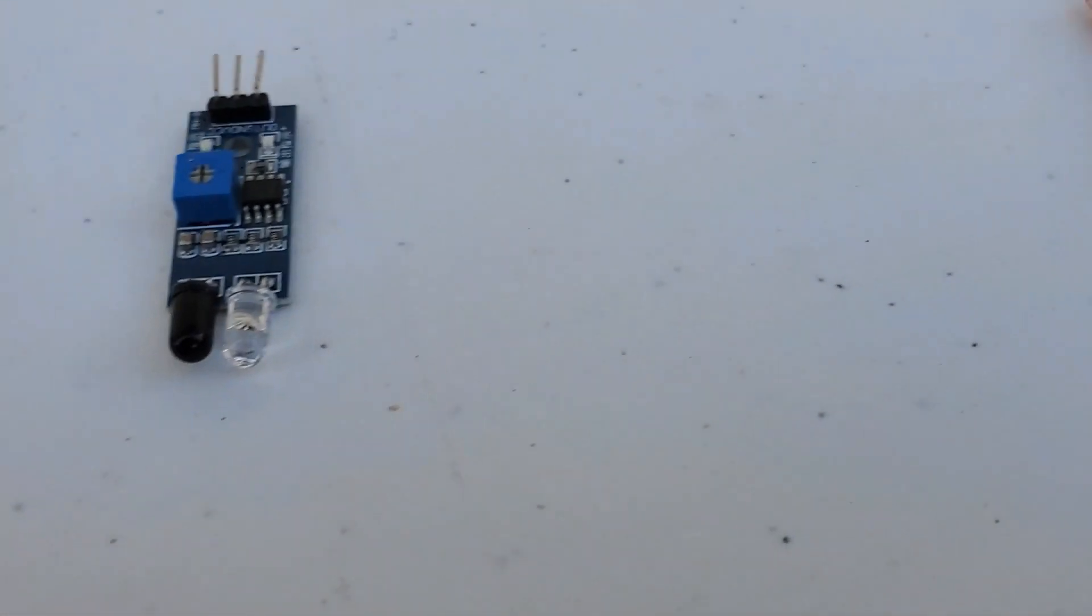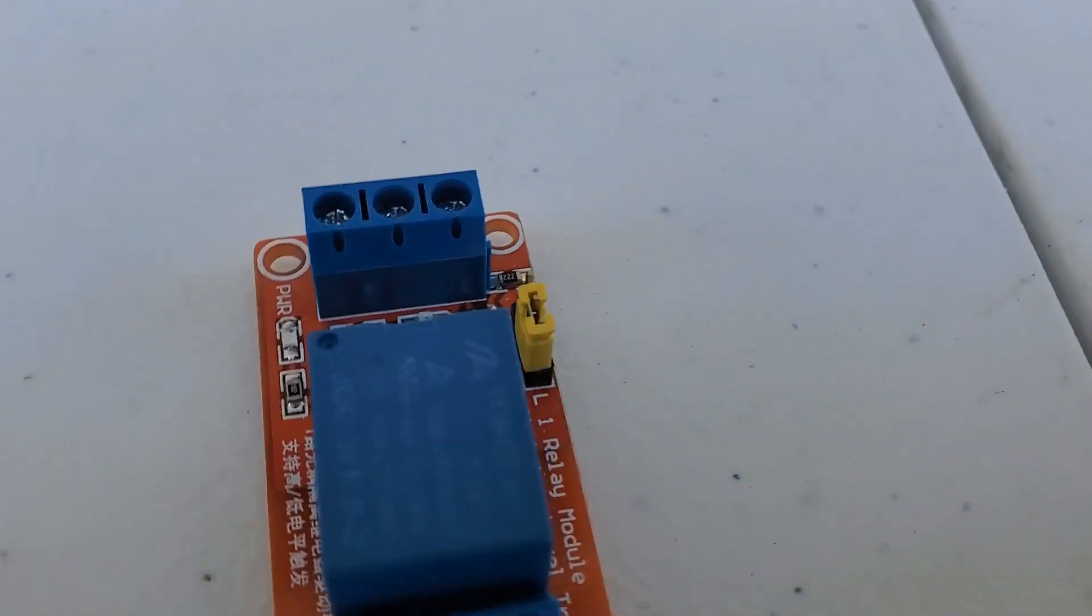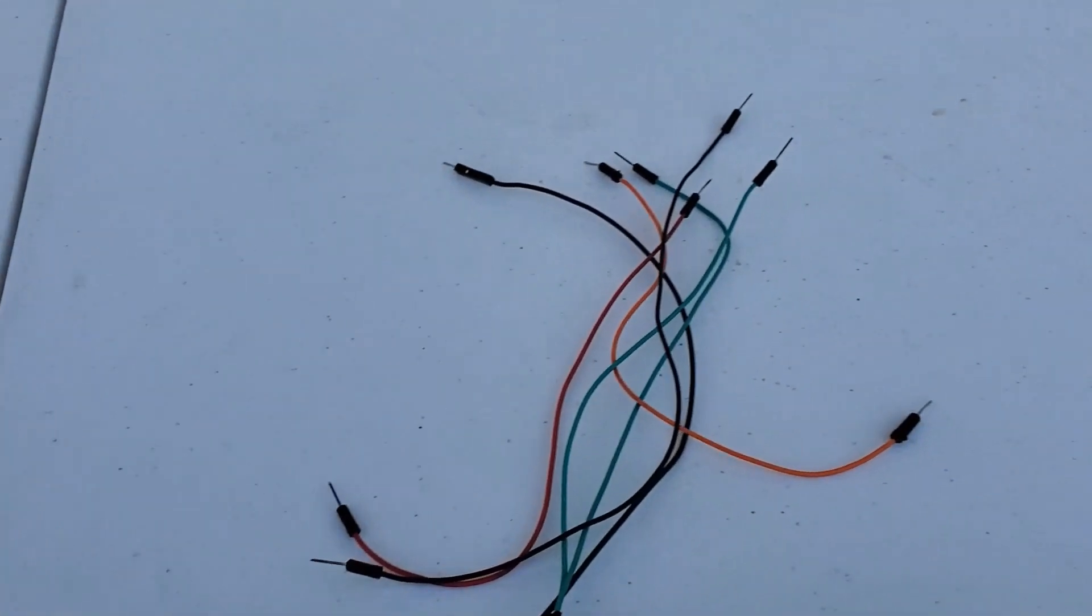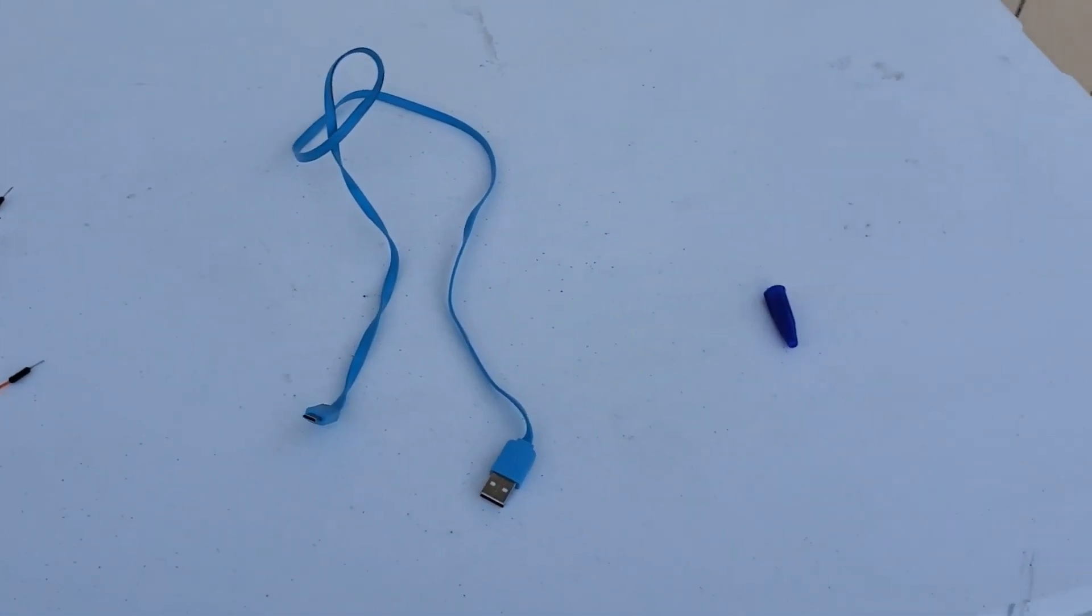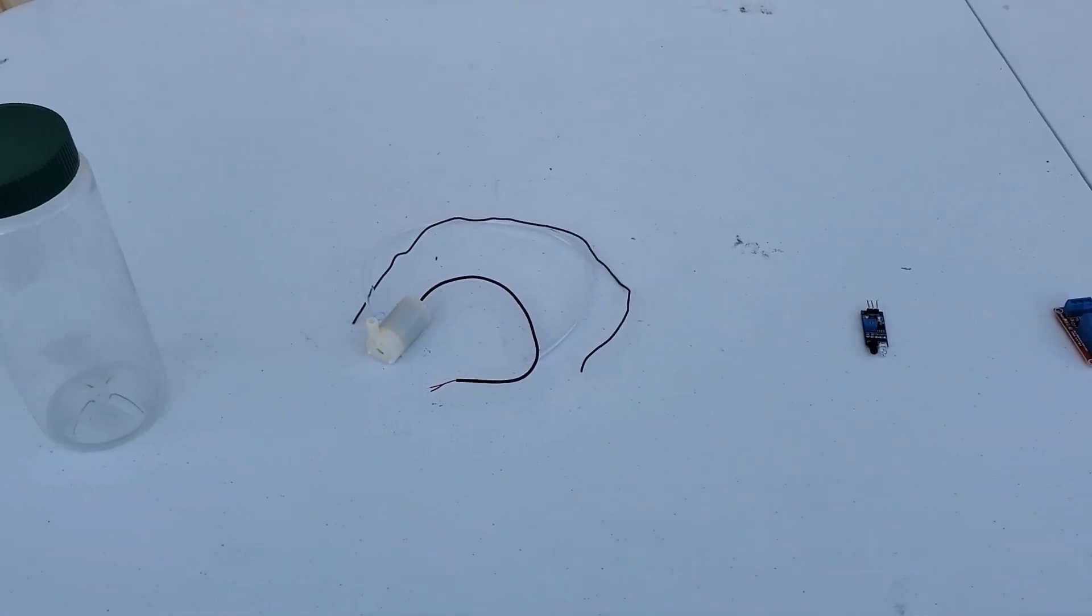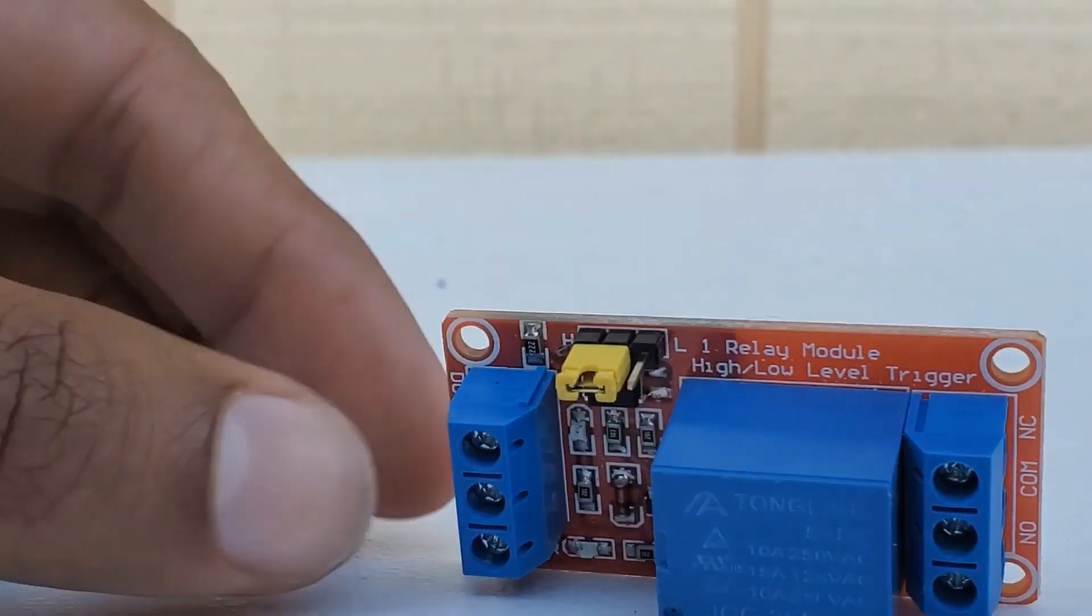A 5-volt infrared sensor, often used in Arduino projects; a 5-volt relay module that has the capability of being triggered low; some jumpers; a USB cable; and a cap from a pen.